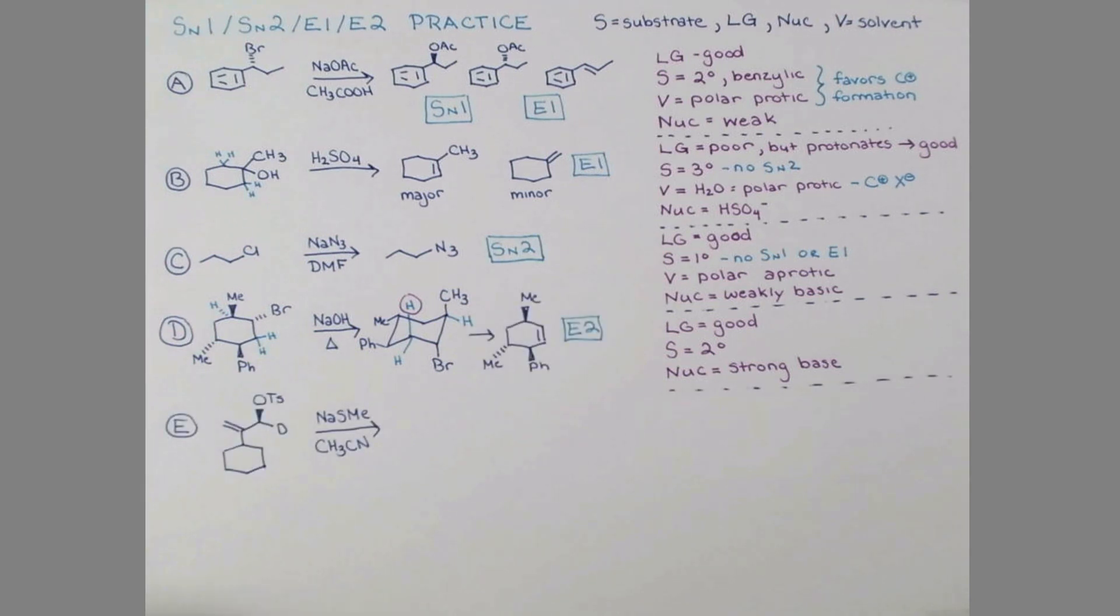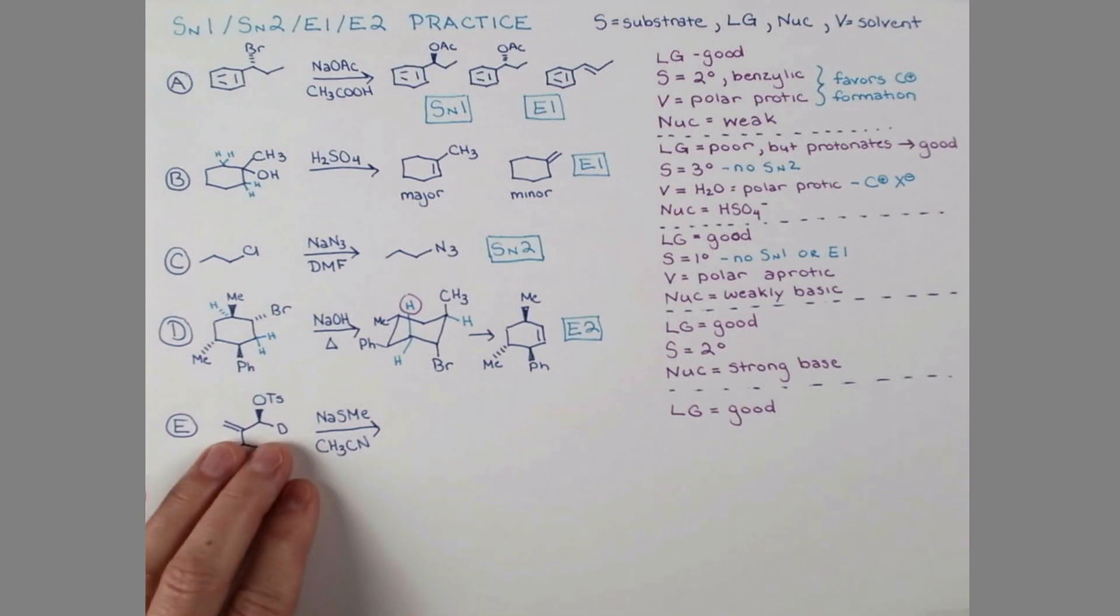Now pause me and try this problem. We're going to treat this tosylate with NaSMe and acetonitrile as solvent. We have a little D here - this stands for deuterium, which is just heavy hydrogen. It's going to behave a lot like hydrogen. OTosyl is a good leaving group. We're going to have a reaction here.